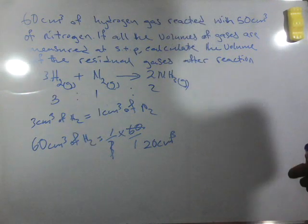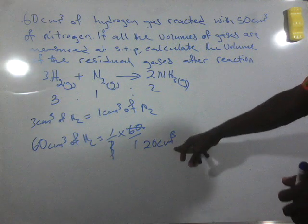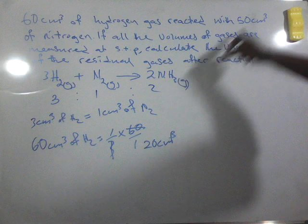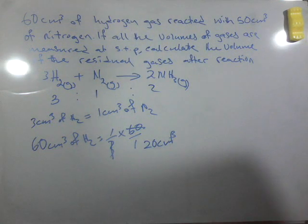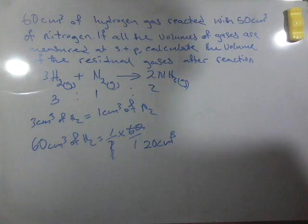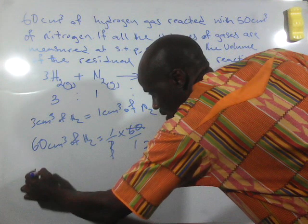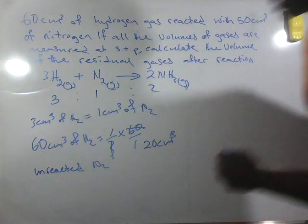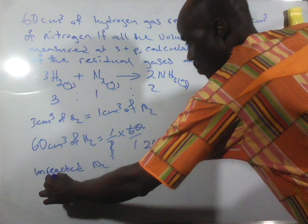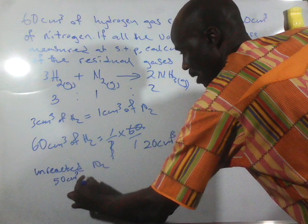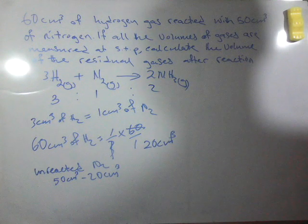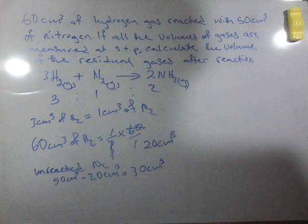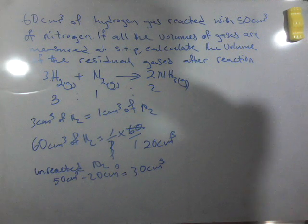If this volume is reacting, it means that nitrogen is in excess. The unreacted nitrogen would then be 50 cm³ minus 20 cm³. When you subtract that, what you have here will be 30 cm³ of unreacted nitrogen.